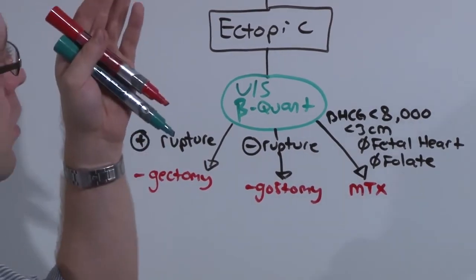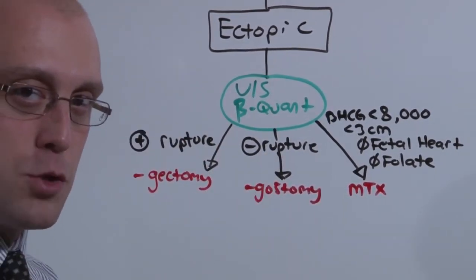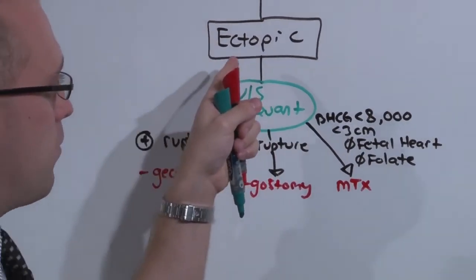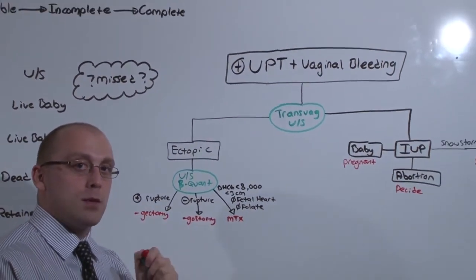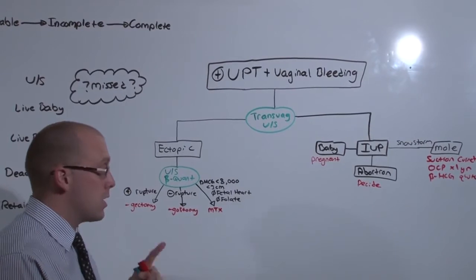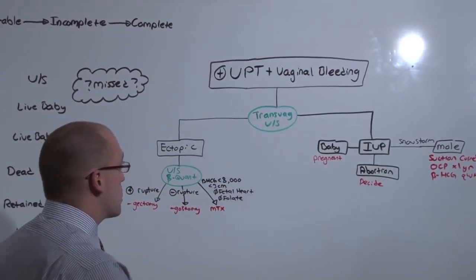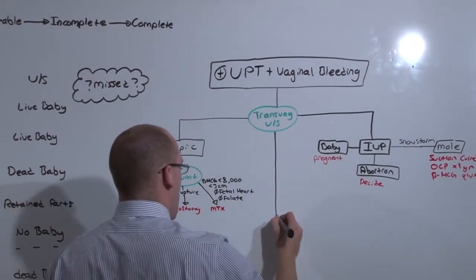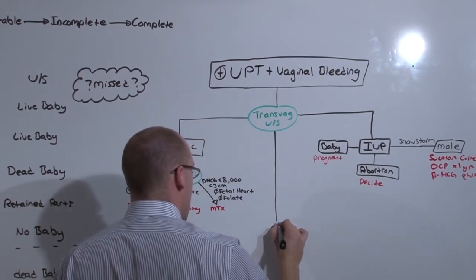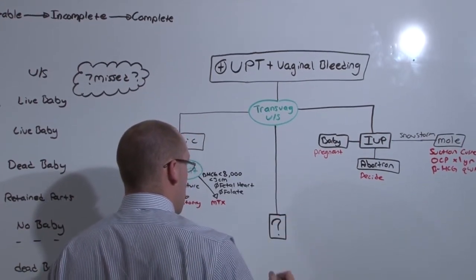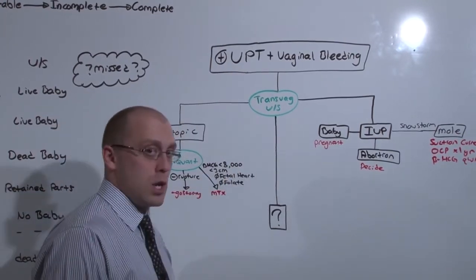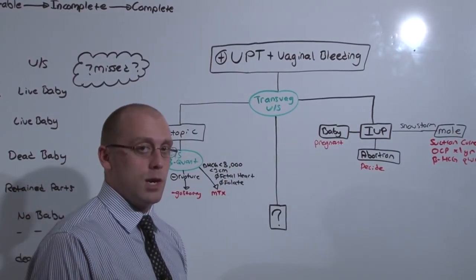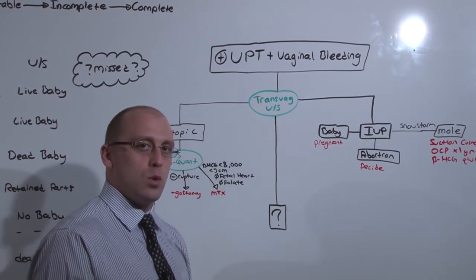So this is what happens if you have a positive UPT and vaginal bleeding when ectopic is obvious or intrauterine pregnancy is obvious. The way you get the bonus points on the wards and that one extra question on the shelf is what happens when you don't see anything. That's weird, because you've got a positive UPT and transvaginal ultrasound is really good at identifying intrauterine pregnancies.